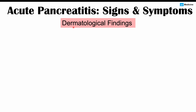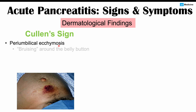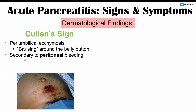There are important dermatological findings in acute pancreatitis. Cullen's sign is peri-umbilical ecchymosis — bruising around the belly button — secondary to peritoneal bleeding caused by inflammation of the pancreas.